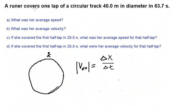Okay, so the problem says a runner covers one lap of a circular track that's 40 meters in diameter in 63.7 seconds. Okay, so here I drew a circle and I drew myself at the top right here and I'm going to run around this circle. Okay, so I'm running around the circle. And the first thing that I noticed is that the circle has a diameter of 40 meters. Okay, so I am going to draw the diameter. This is the diameter of the circle. It's 40 meters.